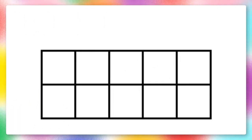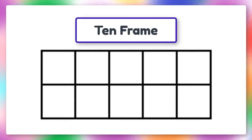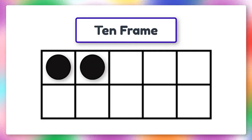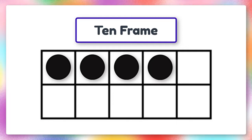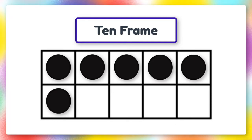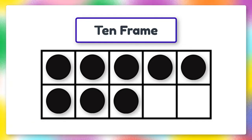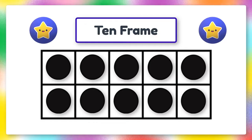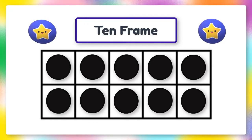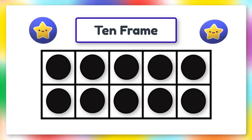Another way we can figure out the friends of 10 is by using what's called a 10 frame. Let's count the dots as they appear. 1, 2, 3, 4, 5, 6, 7, 8, 9, 10. Well done! So that means that every time this 10 frame is filled, we always have 10 dots.